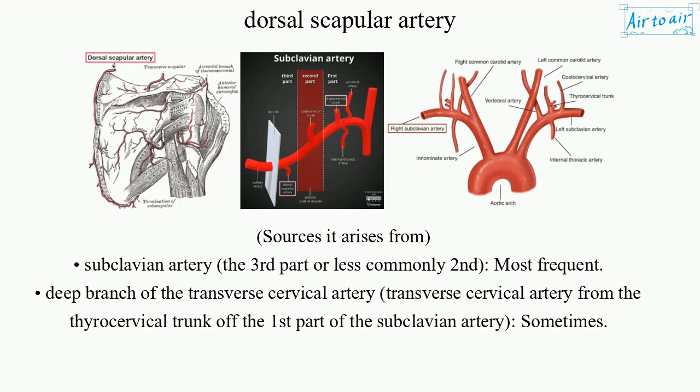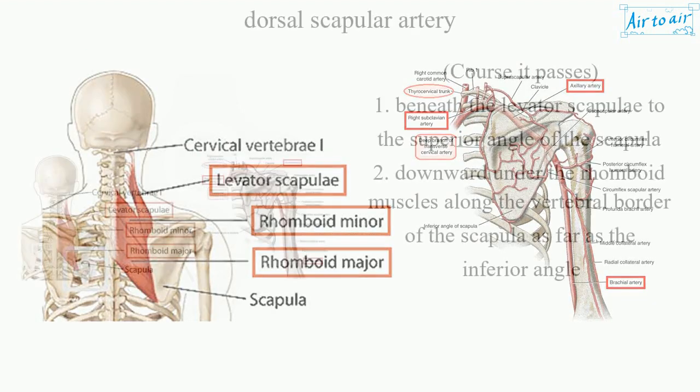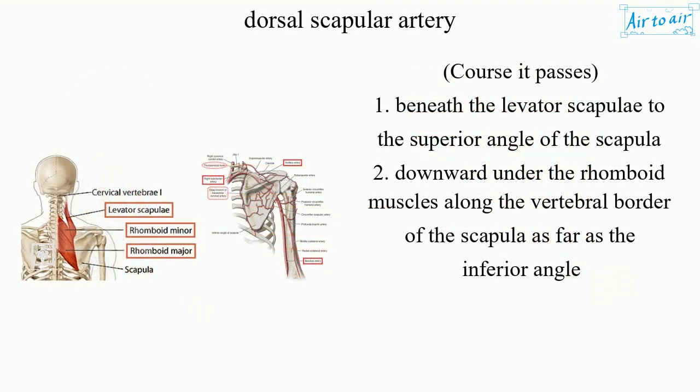Course: It passes beneath the levator scapulae to the superior angle of the scapula, then downward under the rhomboid muscles along the vertebral border of the scapula as far as the inferior angle.